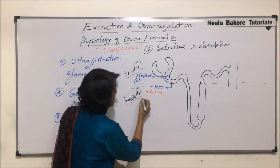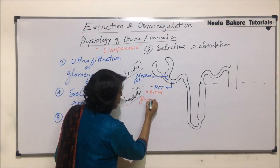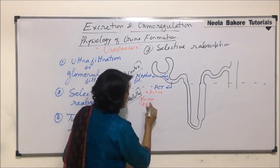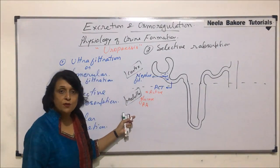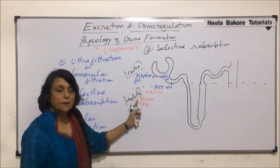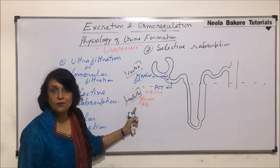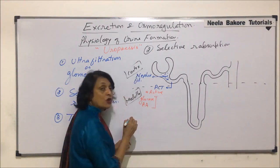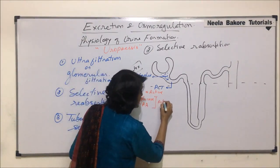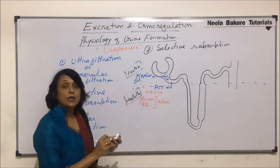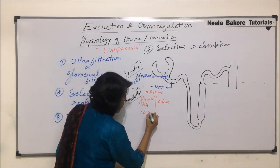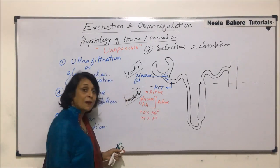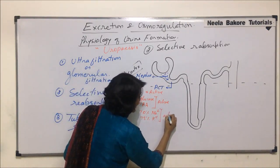The substances which get absorbed here are glucose — 100% — and amino acids — 100%. These are high threshold substances. Glucose and amino acids are absorbed actively. About 70% of sodium ions and 75% of potassium ions are also absorbed actively.